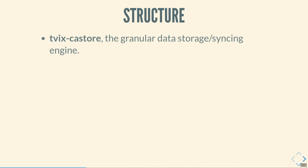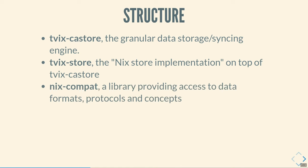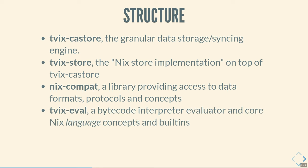Structurally, we have a Cargo workspace with a bunch of Rust crates. There is Tvix CA store — it's a very granular data storage syncing engine, which is not really specific to Nix at all. Then we have Tvix store, which gives you the store implementation on top of CA store, using CA store as the underlying engine and giving you Nix store semantics. Then we have NixCompat, which is a library containing access to all data formats and protocols and concepts of Nix, but not depending on any Tvix-specific concepts — it's meant to be a reusable library for other consumers who don't want to reinvent all the parsers and writers for these data structures.